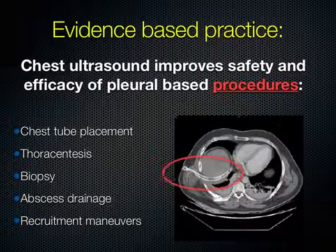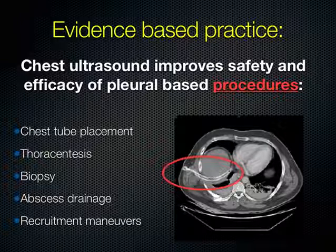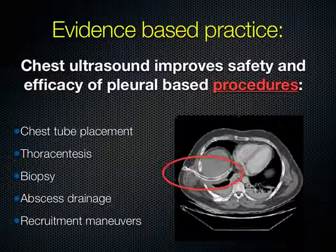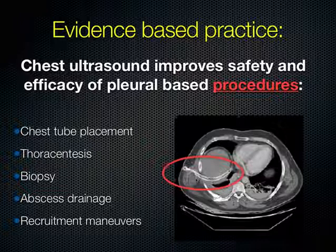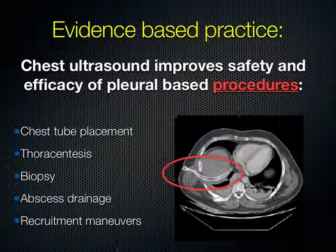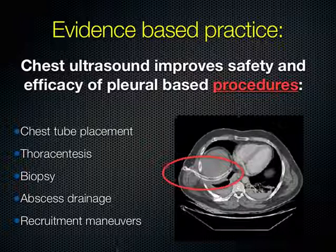Chest ultrasound has definitely been shown to improve the safety and efficacy of pleural-based procedures. You might tap out what you think is dullness and where a pleural effusion should be, but you might be wrong and instead place a chest tube directly into someone's liver. When you have the opportunity to use ultrasound to localize fluid in real time, there's really no reason not to use it.